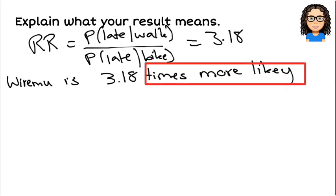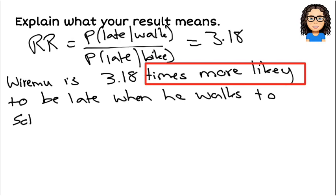He's 3.18 times more likely to be late when he walks to school. I'm going for the one on the top, numerator. Walks to school. Compared with biking.